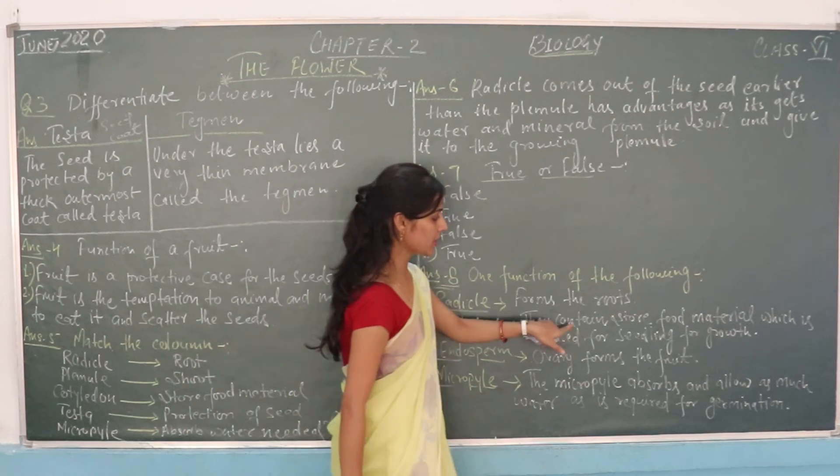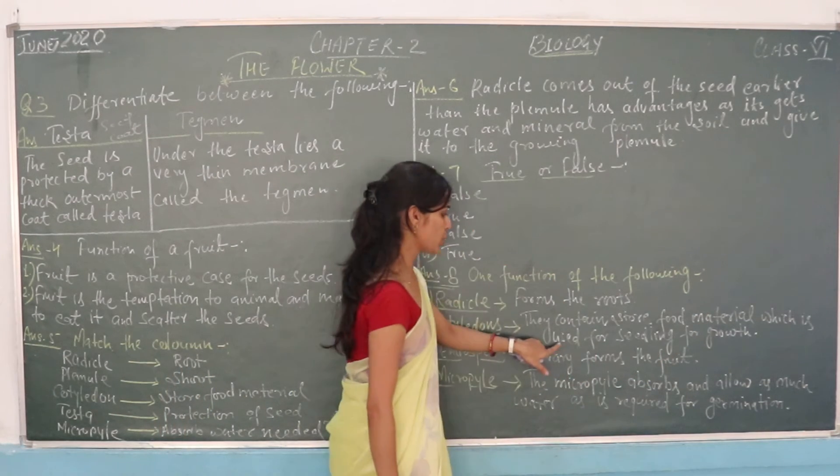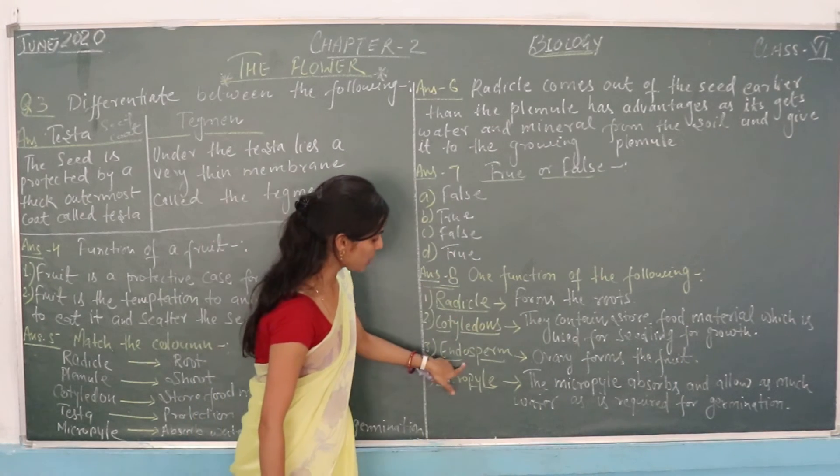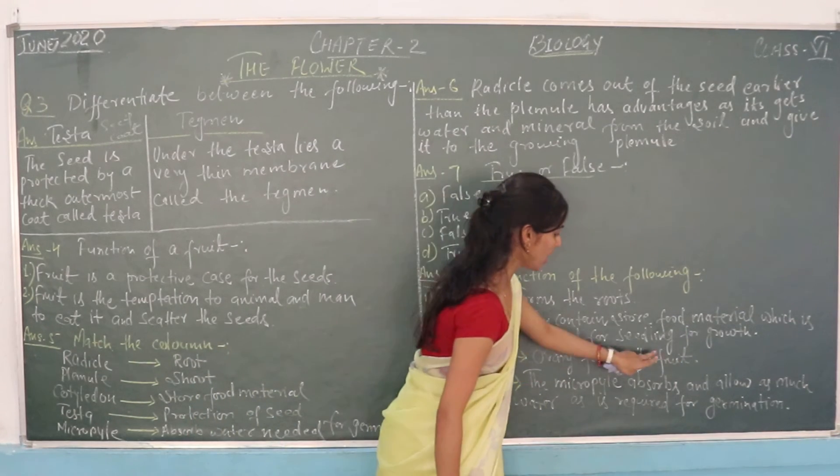Cotyledon: They contain stored food material which is used for seedling growth. Ovary forms the fruit.